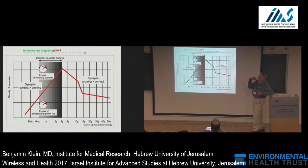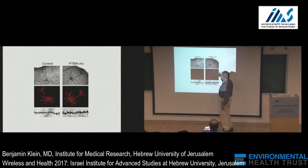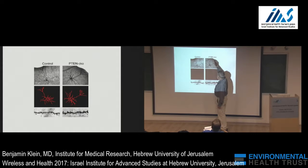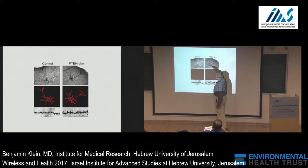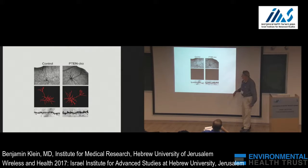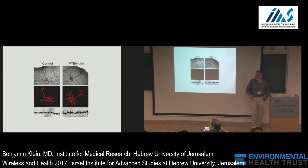This shows you the difference between control and PTEN knockout — a condition in the brain. You can see that PTEN, which is upstream as shown in the earlier figure, can increase hyper-connectivity and hyper-growth of neurons. Here the spines are much thicker and much denser than in the control.